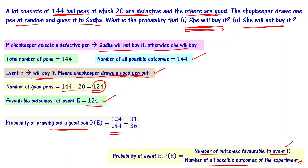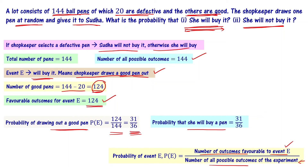This simplifies to 31 times 4 divided by 36 times 4, which gives 31 by 36. So the probability of drawing out a good pen is 31 by 36. It means the probability that Sudha is going to buy a pen is 31 by 36.